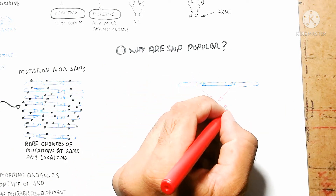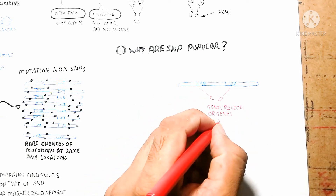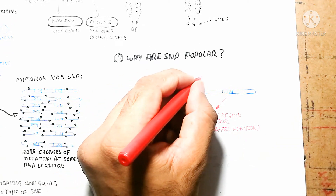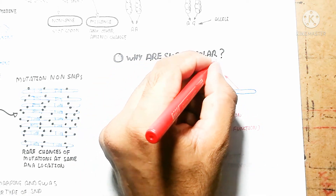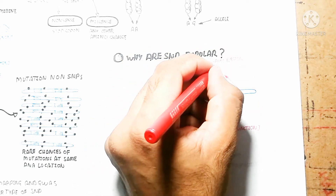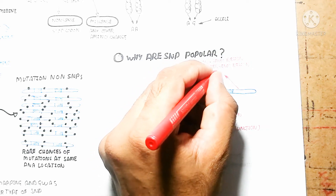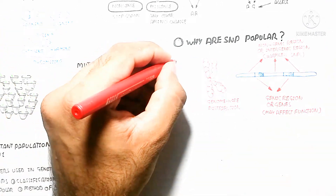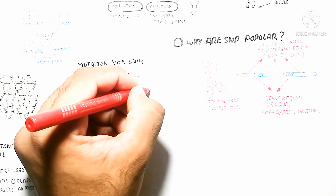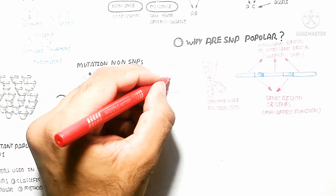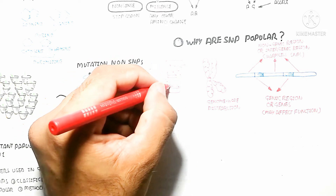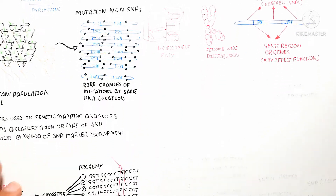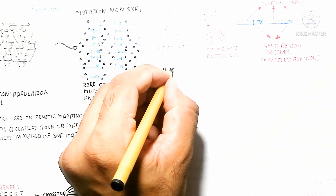Why are SNPs popular? SNPs are popular because they occur frequently in non-genic or intergenic regions and are harmless. They can be detected to show differences within a population. Some SNPs occur in genic regions and may affect gene function or phenotype, but many are hidden — not expressed phenotypically — and can only be detected genotypically. SNPs also have genome-wide distribution across the entire genome, and their development as markers is relatively easy.